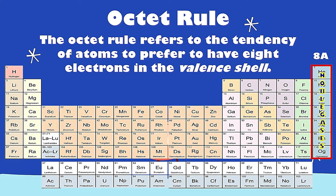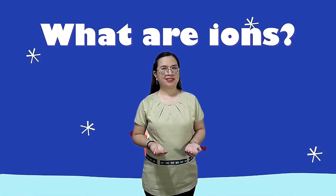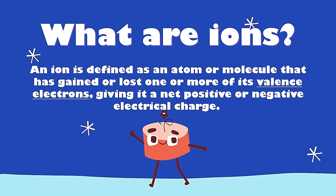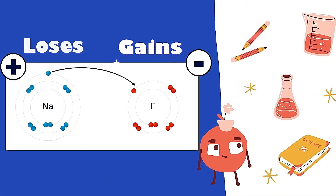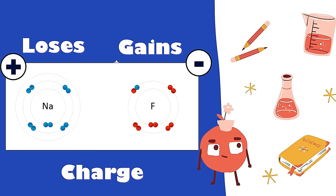This is the reason why noble gases rarely react with other elements since they are already stable. What are ions? An ion is defined as an atom or molecule that has gained or lost one or more of its valence electrons, giving it a net positive or negative electrical charge. If an atom loses or gains valence electrons, an ion is formed.